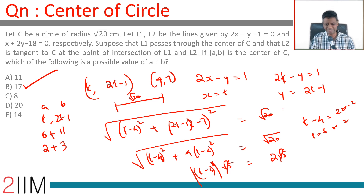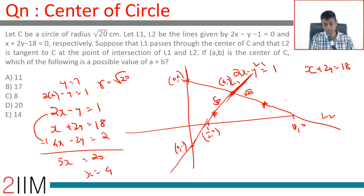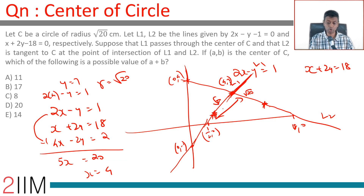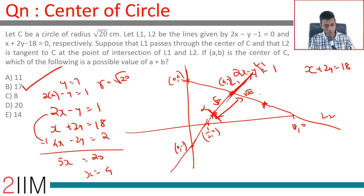To summarize: we drew the two lines, found the point of intersection, then took the general coordinates of a point on L1, set the distance from that point to (4, 7) equal to √20, and solved. This gives two candidate centers — one yields a+b=17, which is the answer. It's a tough, time-consuming exam question; you may be better off skipping it under time pressure.